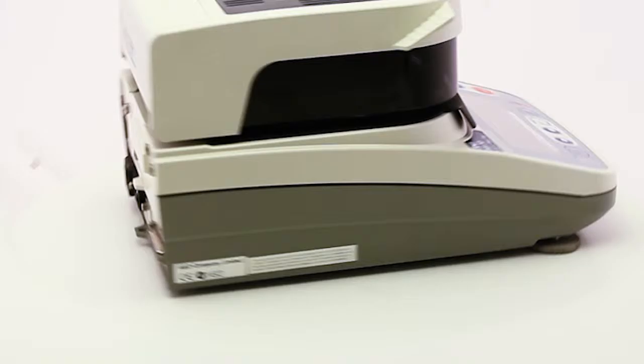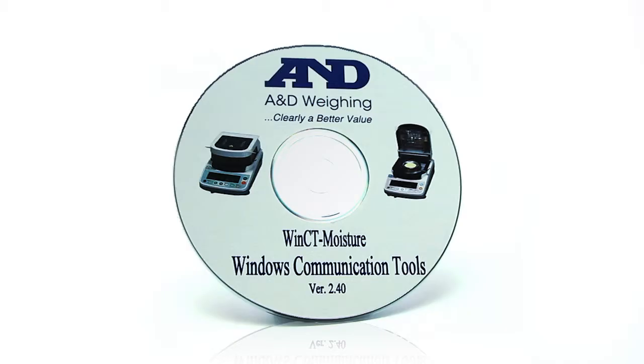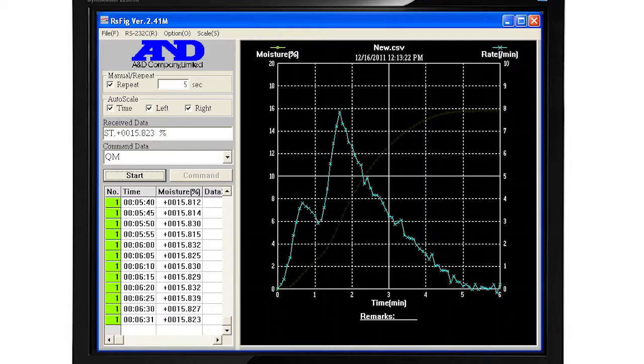Computer control and data export are easy with built-in RS-232. With the MS-70 and MX-50, you also get A&D's WinCT Moisture Software, which displays both moisture and moisture rate changes over time.